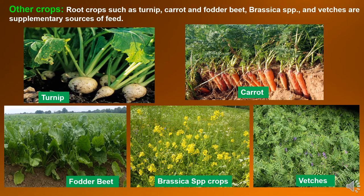Other fodder crops like root crops such as turnip, carrot and fodder beet, brassica species and hedges are supplementary sources of feed.